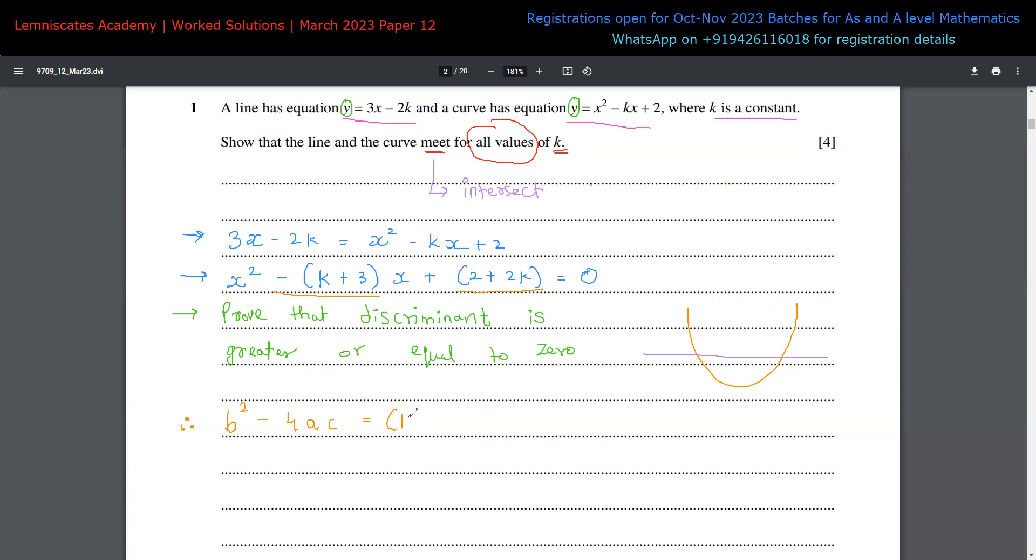So B square is minus K plus three. And if I square this, minus square becomes positive one. So I don't need to show that. But yes, we are having K plus three squared, then minus four, A value is one. So that's basically one over here. And C is two plus two K.